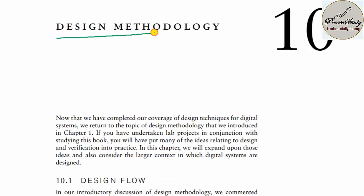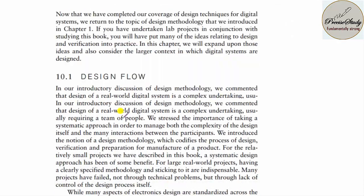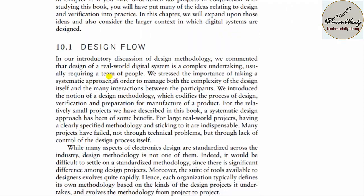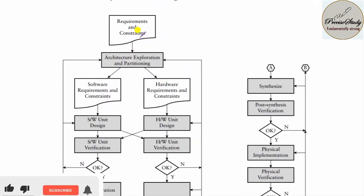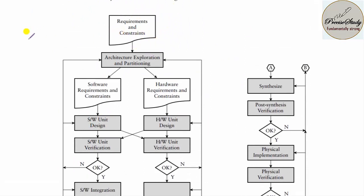Let us start with design methodology. This chapter is an extension of chapter 1. The first topic is design flow. In the case of design flow, you have to remember this flowchart. First, if you want to come up with one product, the first step is you have to write the requirements and constraints.